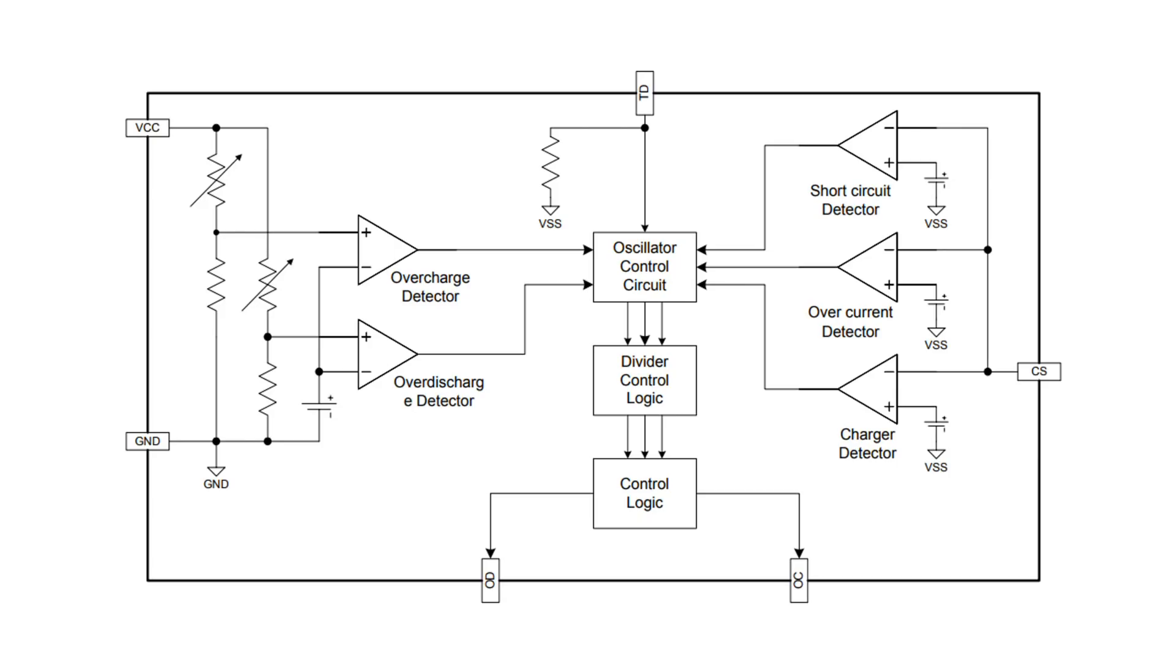Of course, we could build such a protection device ourselves. It would look like that. A first comparator compares the cell voltage and signals, if it is above 4.2 volts. A second comparator signals, if the cell voltage is below 2.5 volts. A third comparator has to compare the discharge current and report, if it is too high.